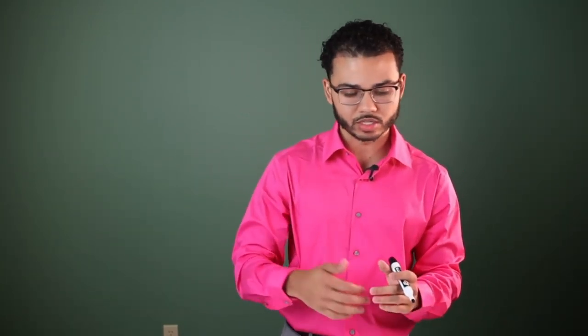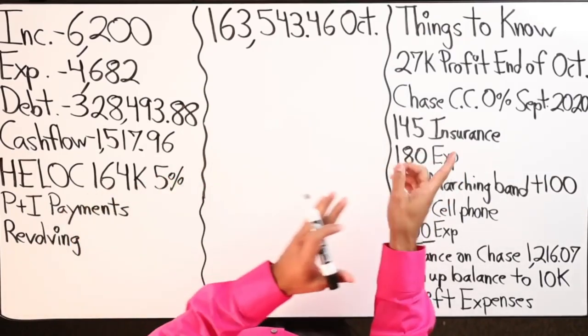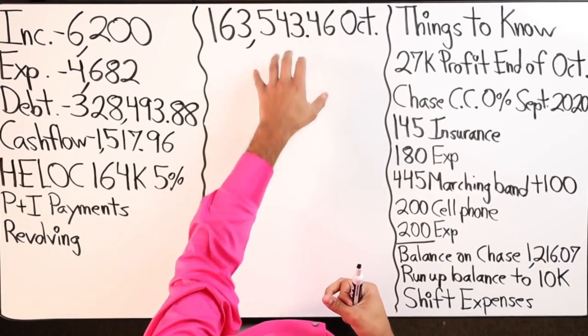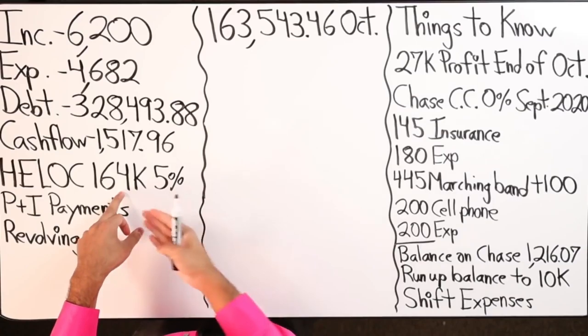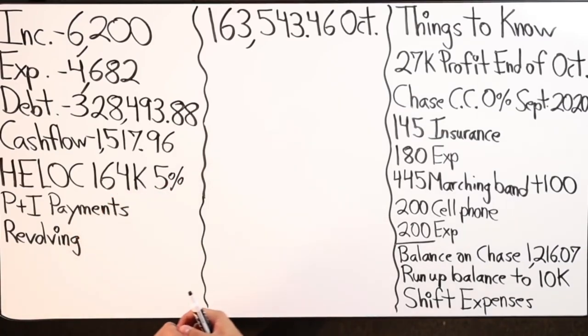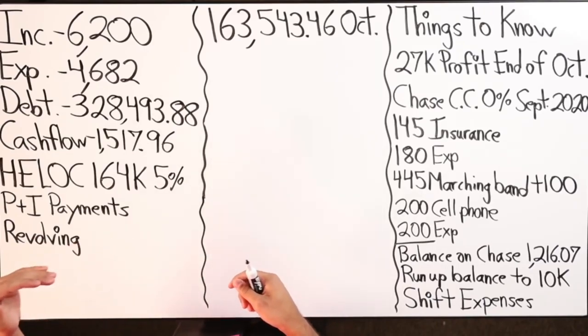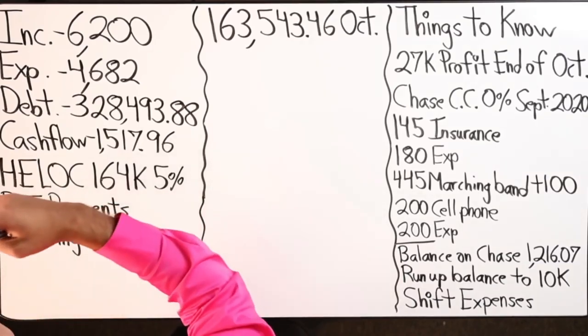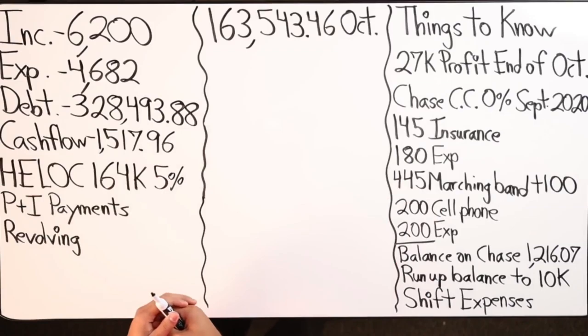I'm also overestimating the HELOC balance because interest fluctuates throughout the month. Starting as of October, the balance owed on the first-position HELOC is $163,543.46 — basically maxed out at $164,000 with only about $1,000 in available credit. The interest rate is 5%, it's a principal-and-interest revolving simple-interest HELOC with unlimited transactions. It meets all the criteria for velocity banking.